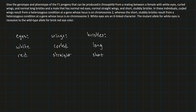Curled wings result from a heterozygous condition at a gene whose locus is on chromosome 2. So if you have curled wings, you have to be heterozygous for those alleles. We'll give this the letter C, so curled wings means you're heterozygous: big C, little C — or C⁺ and C. Both notations work.